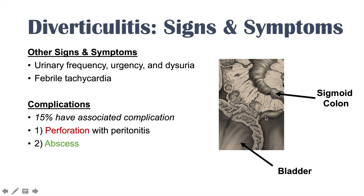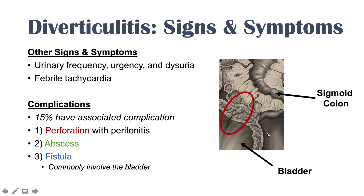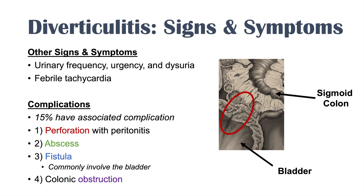Perforation can lead to fecal matter exiting and causing a potential abscess to form. A fistula is an epithelialized tract between one epithelial layer and another. An inflamed diverticulum in the sigmoid colon can lead to a fistula forming between the sigmoid colon and the bladder, which is a common site. Fistulas can also occur between the colon and the skin or other areas. Additionally, a diverticulum can become so inflamed it leads to obstruction of the large intestine.